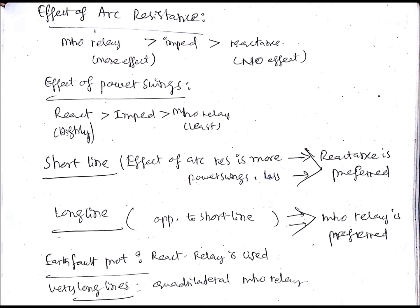Which type of distance relay will be preferred in case of arc resistance? For a short line, the resistance is more significant — we cannot neglect the resistance value. The resistance of a short line is comparable to the reactance, so arc resistance included in the measurement could cause faulty operation of the relay. Therefore, in the case of a short line, we need to use a relay which has very little or no effect due to arc resistance, which is the reactance relay.